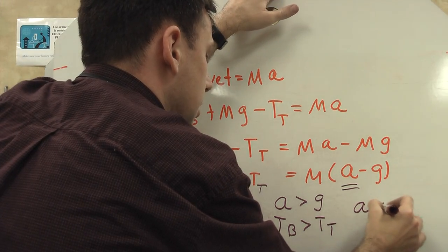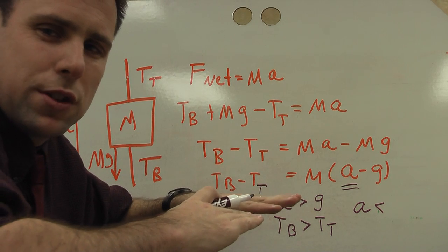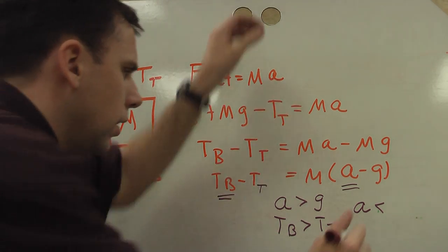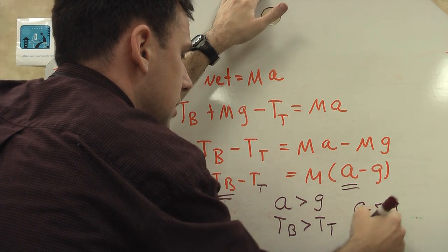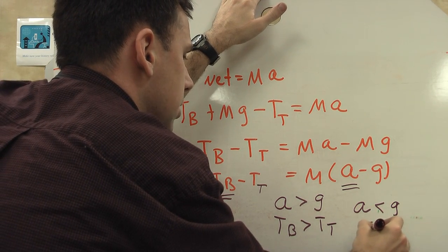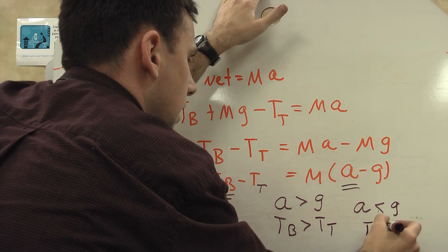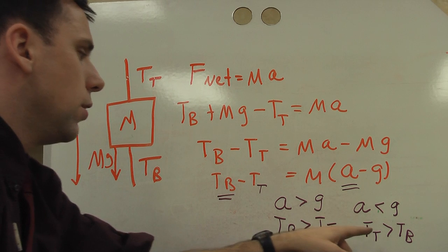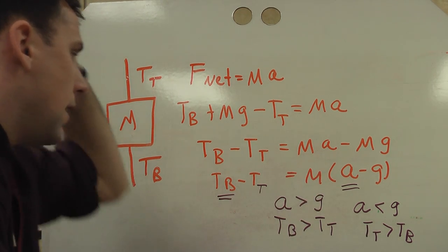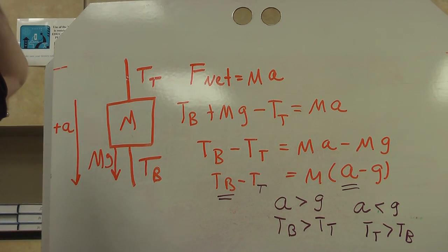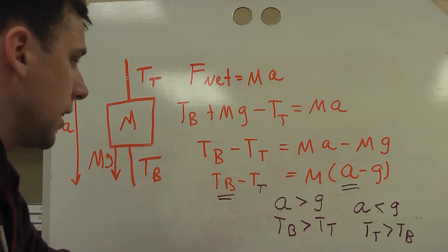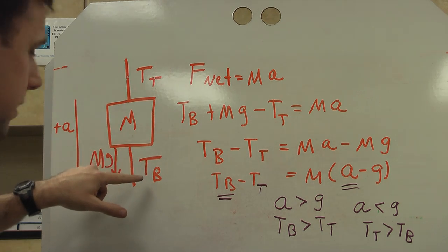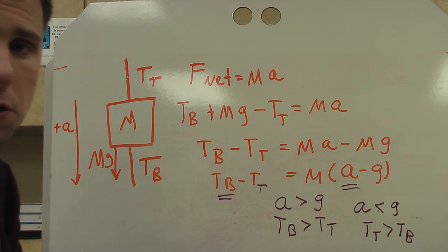Similarly, if the acceleration I give it is a little dinky one, if I just kind of push it real slowly, I don't try to accelerate too much, don't try to rock the boat, the acceleration is less than g, that's going to mean the top tension is going to be greater than the bottom tension. So it's more likely to break the top string than it is to break the bottom string. In fact, if you pull slowly, the tension that's in here is equal to the weight force plus the tension that you're pulling with.